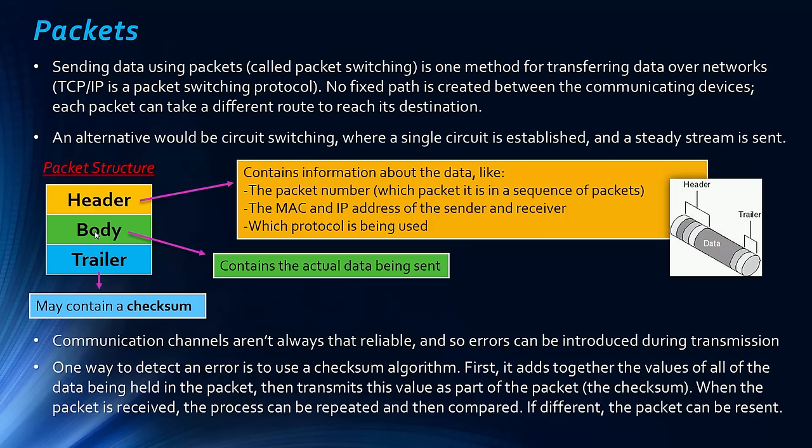As part of protocols for data transmission, when a device receives a packet from a sending device it sends back a confirmation. If no confirmation is received, or if it sends back an error, the packet is simply re-sent. This re-transmission may happen a lot more than we realise.